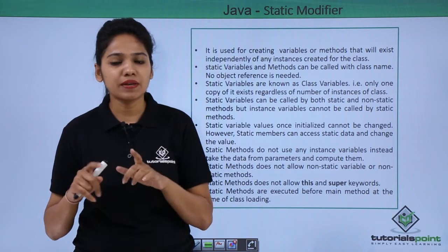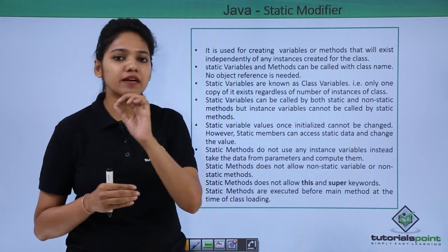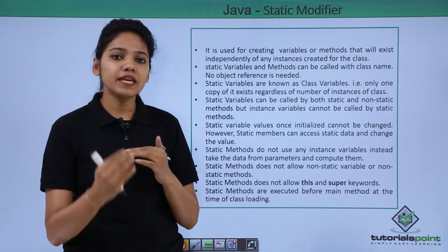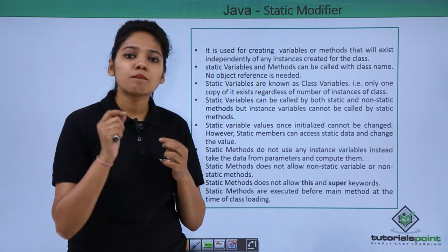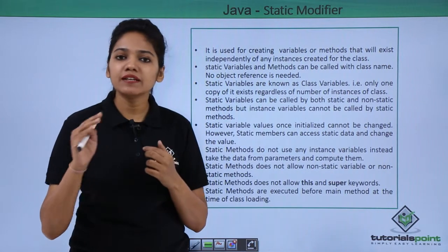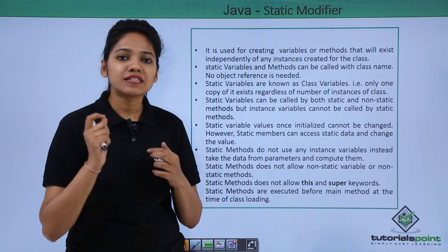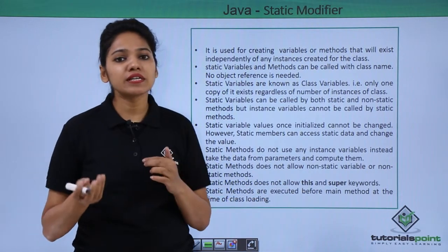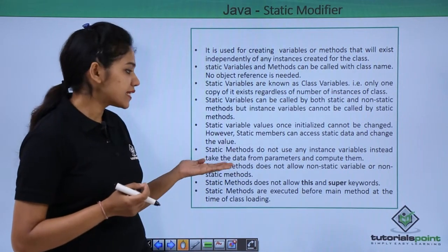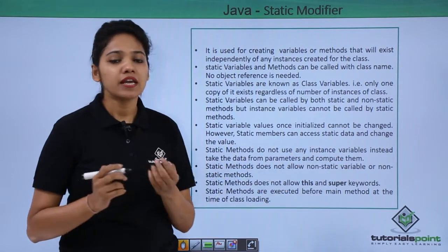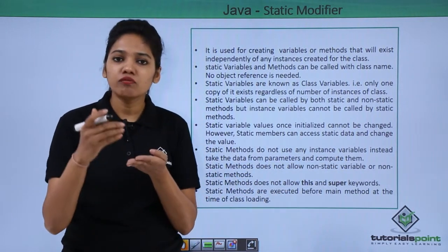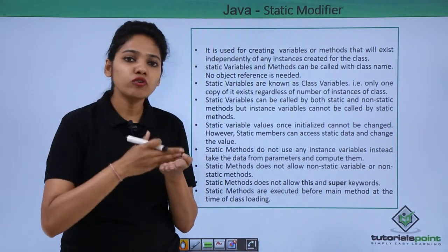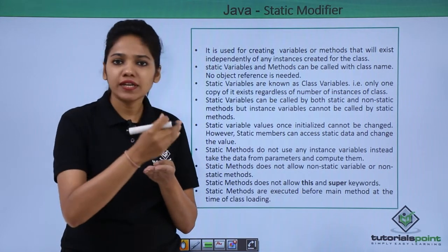Now let us talk about static methods and how to use them. A method defined with the 'static' keyword becomes a static method. In Java, normally the main method is executed first, but once a method has the static keyword, it is executed before the main method during class loading. Importantly, static methods do not use instance variables — you cannot call an instance variable inside a static method.